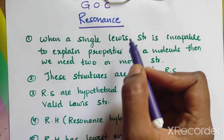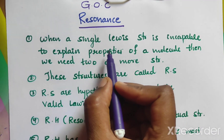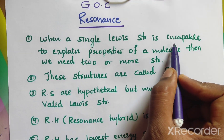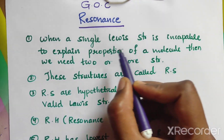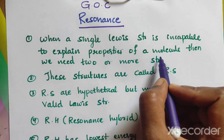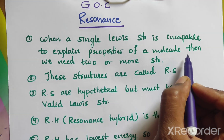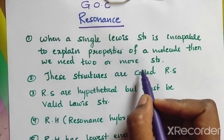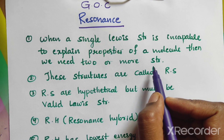So, what is resonance? When a single Lewis structure is incapable to explain the properties of a molecule, then we need two or more structures.